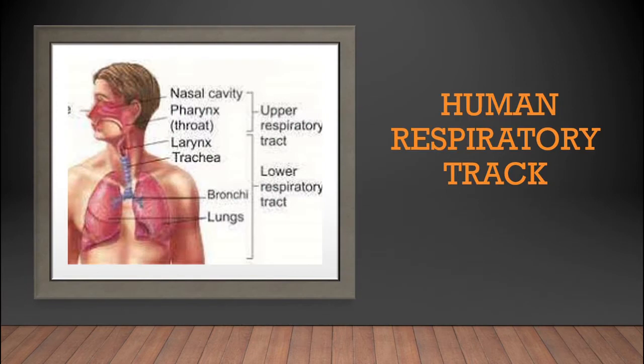Then comes the human respiratory tract, which is divided into two main regions: the upper respiratory tract and the lower respiratory tract. The upper respiratory tract includes the nasal cavity and the pharynx, which is also known as the throat. The lower respiratory tract includes the larynx, trachea, bronchi, and the main organ — the lungs.